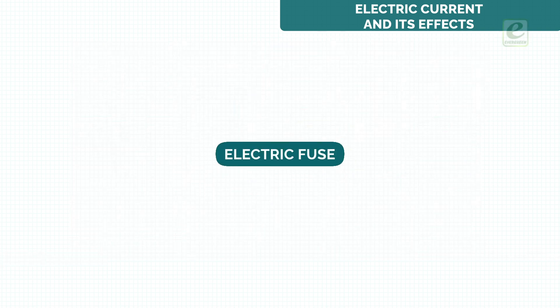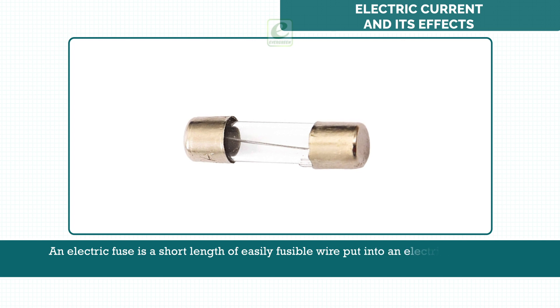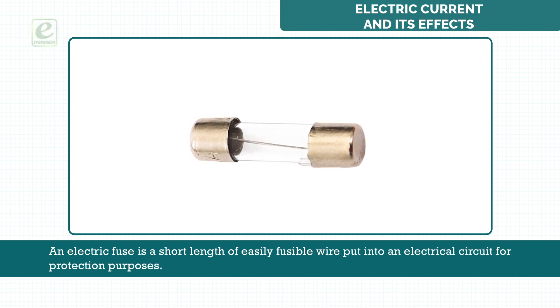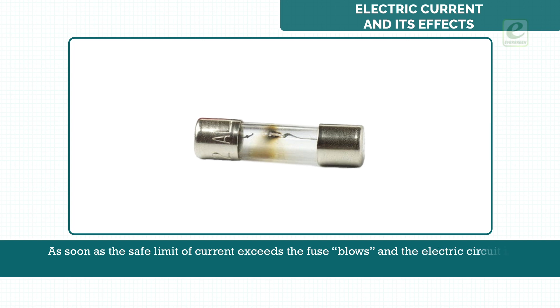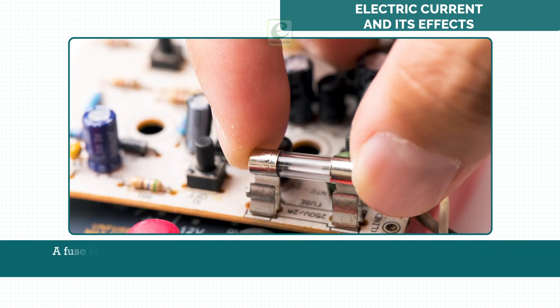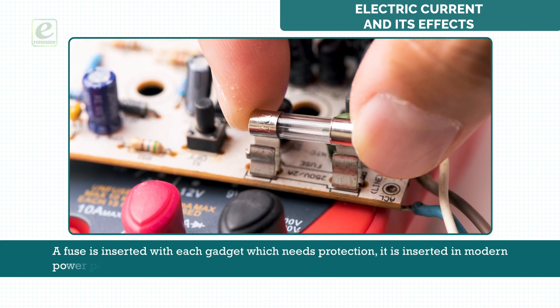Electric fuse. An electric fuse is a short length of easily fusible wire put into an electrical circuit for protection purposes. It is an alloy of lead and tin, 63% tin and 37% lead. It offers a high opposition to the flow of current through it and has a low melting point. As soon as the safe limit of current exceeds, the fuse blows and the electric circuit is cut off. A fuse is inserted with each gadget which needs protection. It is inserted in modern power plugs.